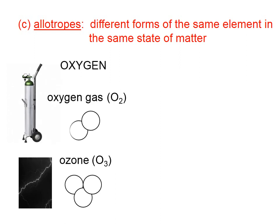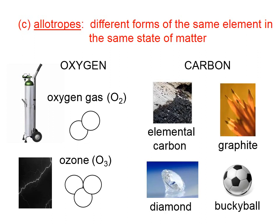Allotropes are different forms of the same element in the same state of matter. Oxygen has these two allotropes. Oxygen gas, which is normally found as O2, and ozone, which is also a gas, which is three oxygen atoms bonded together.